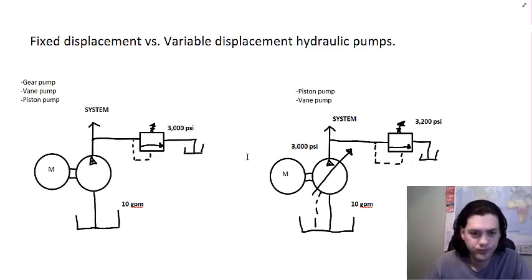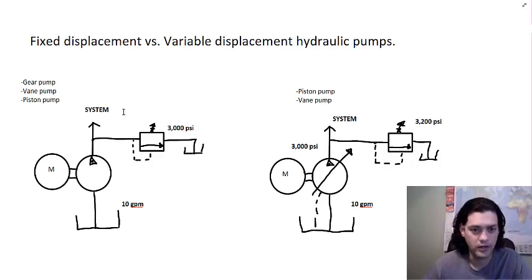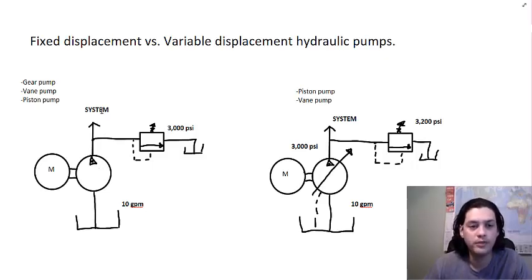Let's say you have a 10 GPM pump and a 3,000 PSI relief valve. There's an electric motor and the fixed displacement pump. It takes oil from the reservoir and pumps 10 GPM into the system. For any pressure below 3,000 PSI, the pump keeps pumping fluid, and when pressure reaches 3,000 PSI, the relief valve opens.